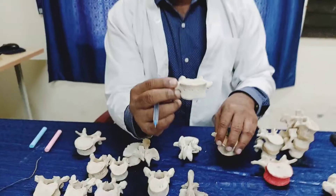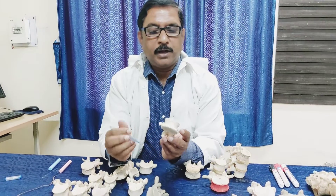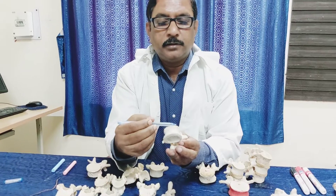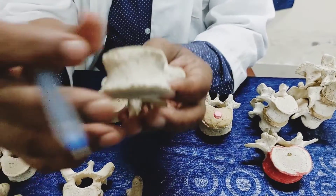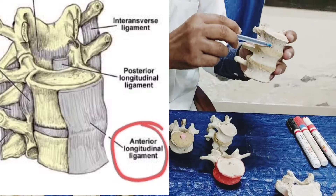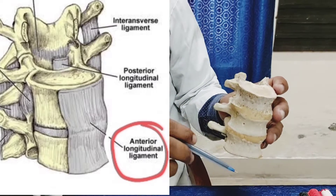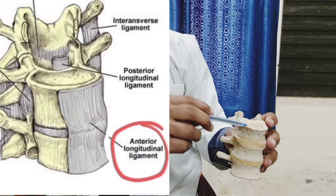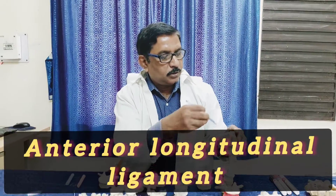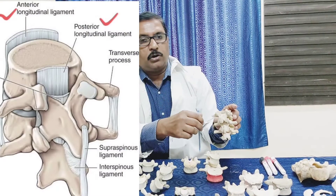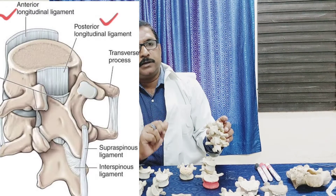Now let's discuss some important attachments that may be asked in examinations. On the body in the midline there is a ligament called the anterior longitudinal ligament. This is not only for the lumbar vertebra — throughout the vertebral column, in front of all lumbar, thoracic, cervical vertebra up to sacral one, there is an anterior longitudinal ligament. Similarly, on the posterior surface of the body there is another ligament placed longitudinally called the posterior longitudinal ligament. This is common to all vertebra — thoracic, cervical, lumbar — up to sacral one.